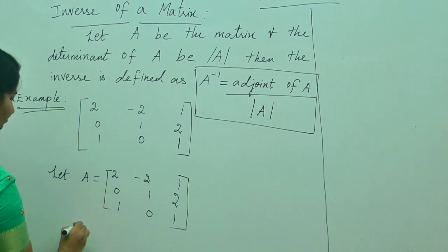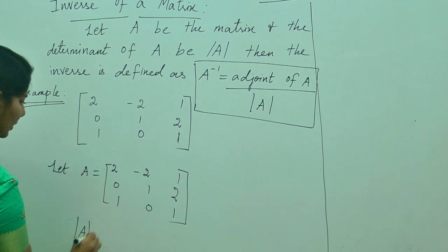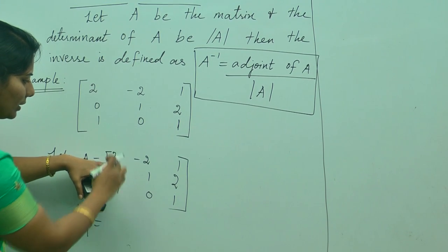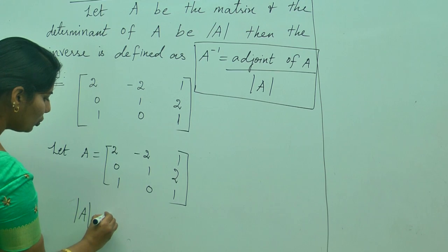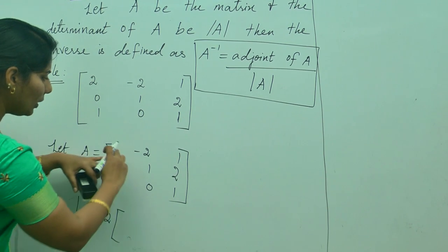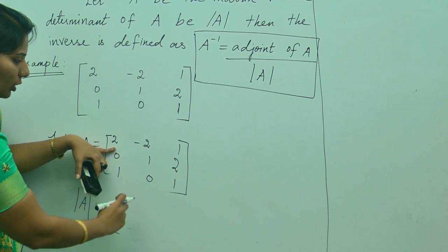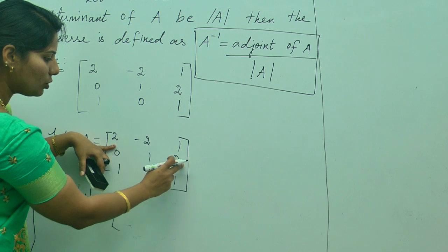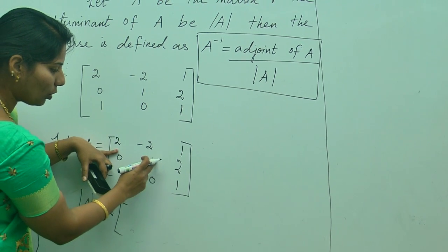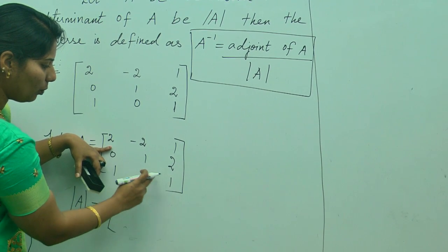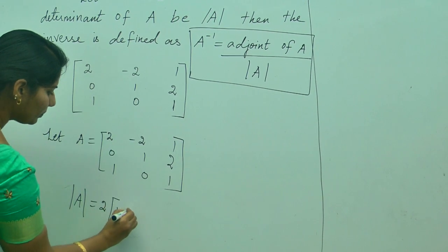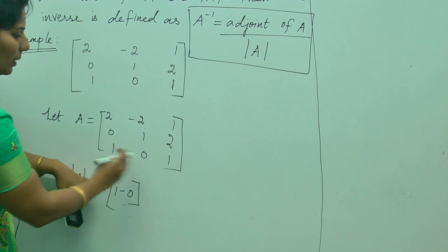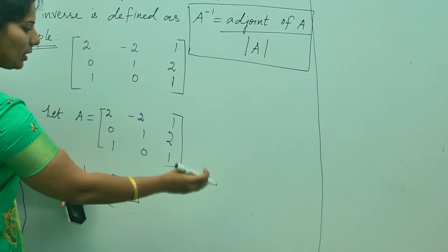First, I am going to find out the determinant. How will you find it? You take the first element, 2, and leave the corresponding row and column. What is left out? 1, 2; 0, 1. Cross multiply: 1 minus 0. Then alternative signs: plus, minus, plus, and so on.